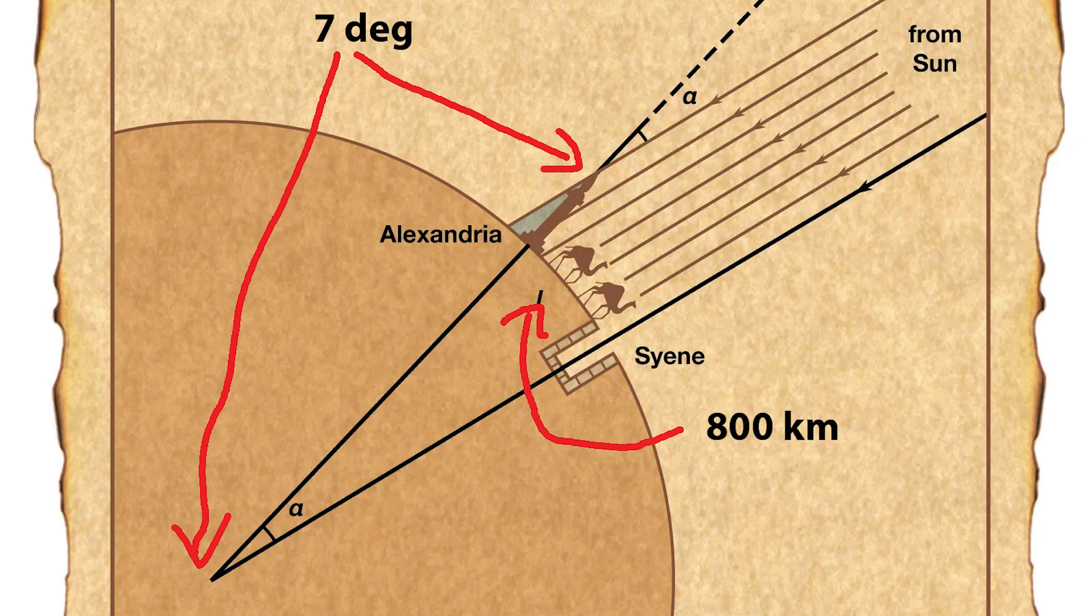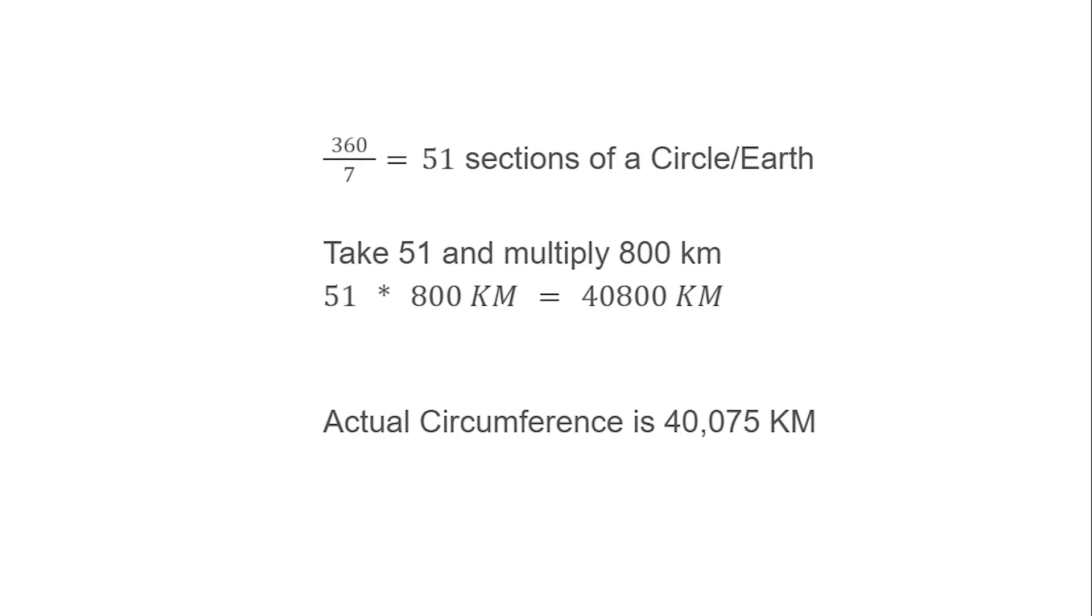After he got all the data, he made a model, something like this, and he put in all the numbers to visualize how this could work. And by using basic geometry and basic arithmetic, he figured out the size of the Earth. Now, here's the basic math that he used.